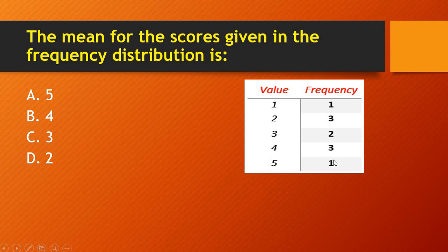Add up the frequencies: 1+3+4+2+6+3+9+1=10. So the sum is 30 and the sum of frequencies is 10. Therefore 30 divided by 10 equals 3, which is option C — the right answer.